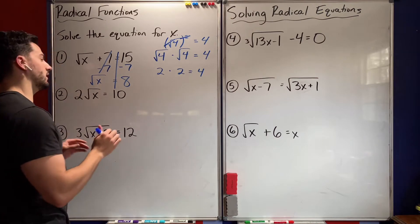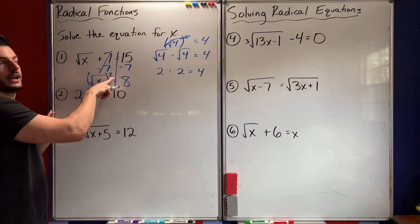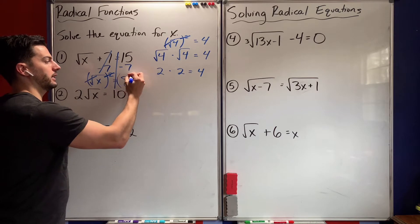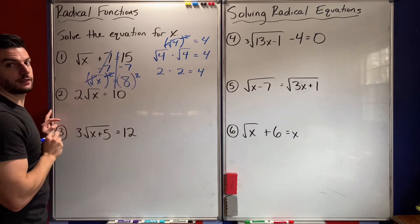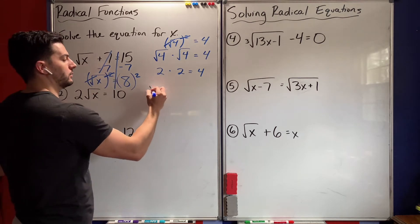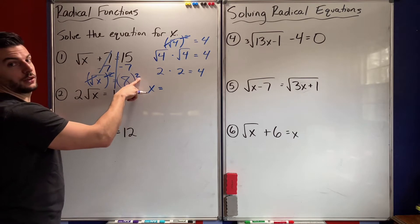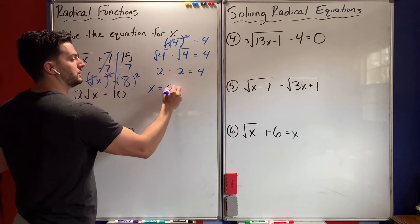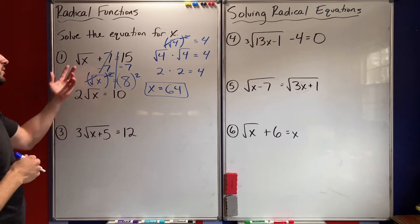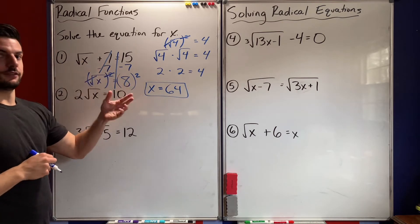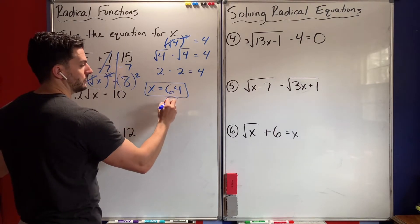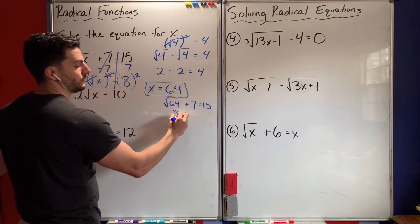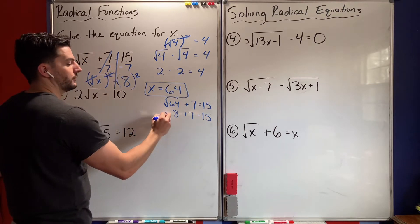Now that the radical is by itself, I can cancel the square root of x by squaring. That rule says I have to do the same thing to both sides, so I square both sides. I'm left with x on the left equals 8 squared. 8 squared is 8 times 8, which is 64. To check: the square root of 64 plus 7 equals 15. The square root of 64 is 8, and 8 plus 7 does equal 15. It checks out.